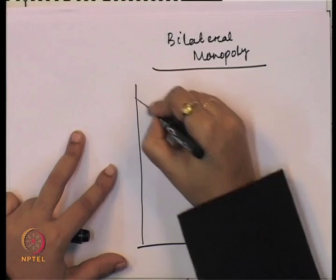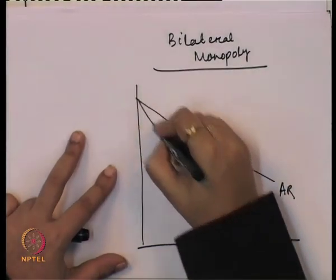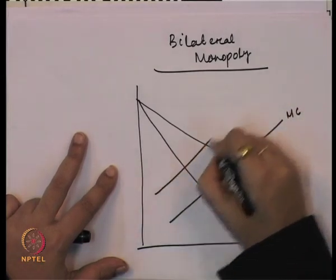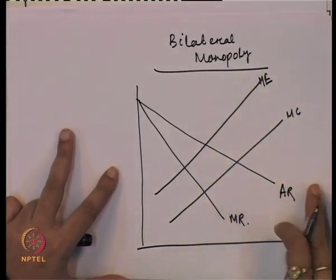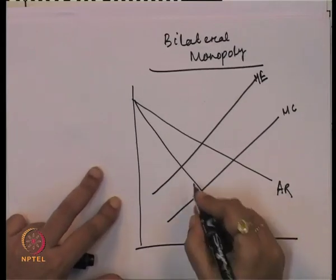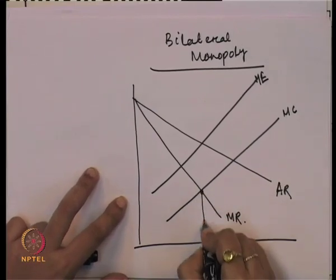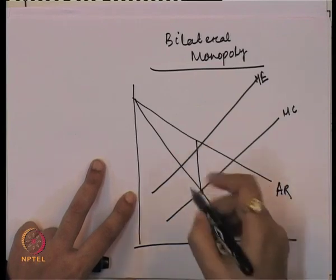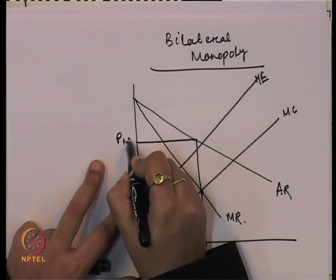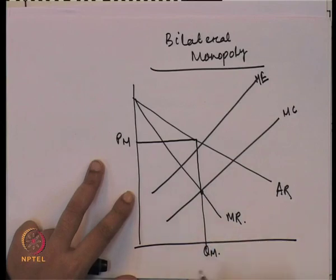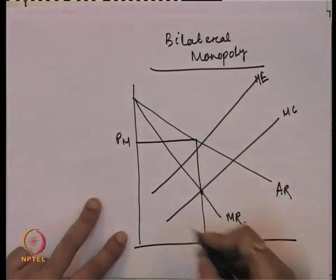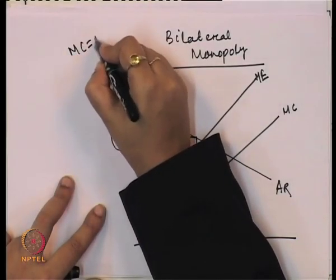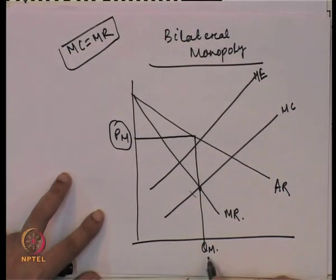In this kind of market, like a typical monopoly market, we have average revenue, marginal revenue, marginal cost, and marginal expenditure. The monopolist equilibrium is at the point where marginal cost equals marginal revenue. We get the corresponding monopoly price, which we can call PM. Through the MC=MR rule, we get the price to be PM and quantity QM.